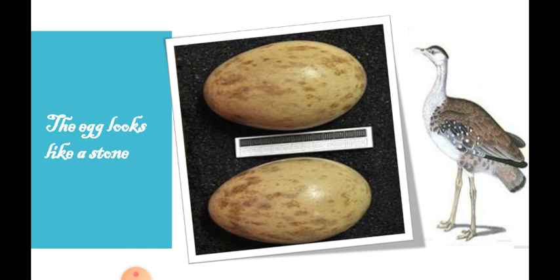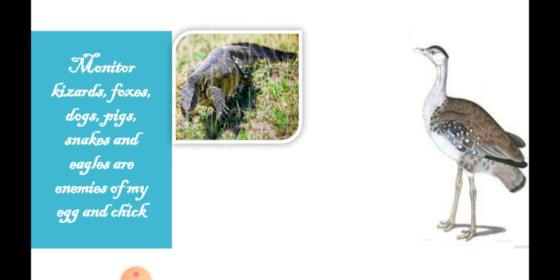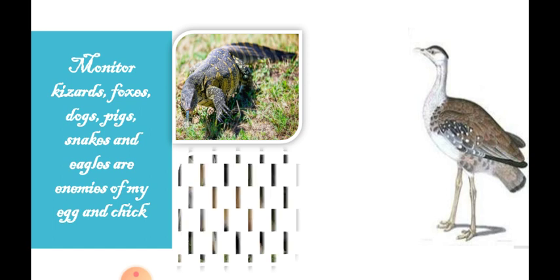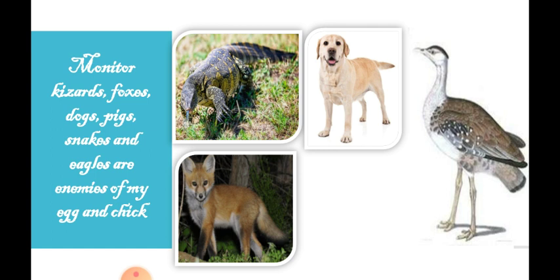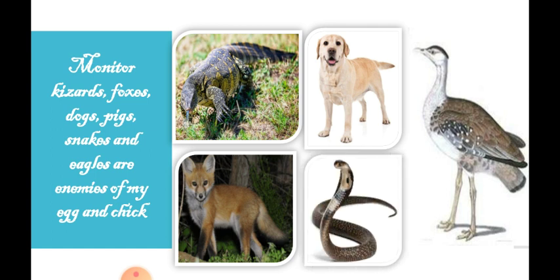Now who are the enemies — the predators — of the eggs of the Great Indian Bustard? Monitor lizard — one of the biggest lizards. You can see the picture of a monitor lizard. Foxes, dogs, pigs, snakes, and even eagles are enemies of its egg. So these are the animals which can eat the eggs of the Great Indian Bustard — not only the egg but even once the egg hatches, the chick — the young one — is also at risk.